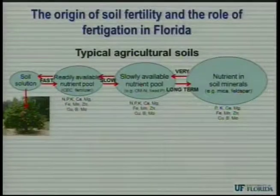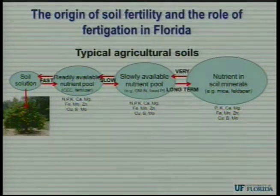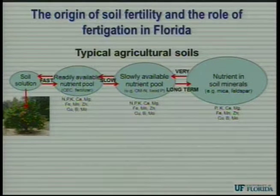The first pool, which is rapidly available, is the dissolved nutrients and also those adsorbed to readily desorbable sources of exchange sites on the soil, such as cation exchange capacity — CEC — and also fertilizer, which is readily available as a man-made attribute. Moving from left to right, things slow down. The next pool, more slowly available, is organic matter which can mineralize — added as compost, soil organic matter, or manures. There's also phosphorus that can be fixed in typical agricultural soils, slowly released over time. The very long-term pool is the minerals, the soil-forming parent materials such as mica and feldspars.